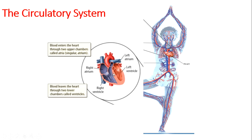These contractions pump blood out of the heart to the rest of your body. When your heart muscles relax, blood from the rest of your body enters the heart. Blood travels through your body in tiny tubes called blood vessels. If all the blood vessels in your body were laid end to end in a single line, they would be more than 95,000 kilometers long.